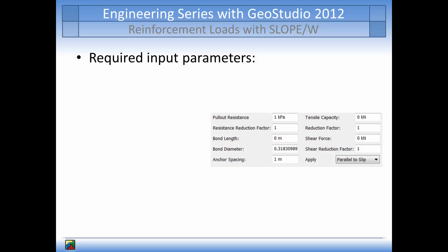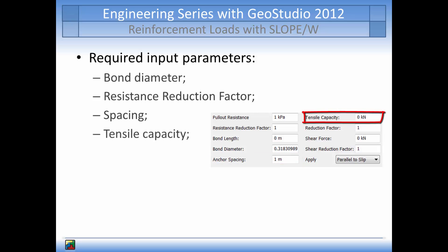The bond diameter, which is the diameter of the grouted section in contact with the soil; the resistance reduction factor, which can be used to account for non-linear stress reduction over the embedded length; spacing, or the distance in the out-of-plane dimension between the anchors and nails along the slope; tensile capacity, or tensile strength of the reinforcement; and reduction factor, which accounts for the reduction of the ultimate tensile capacity due to physical processes such as installation damage, creep, and durability.